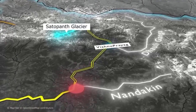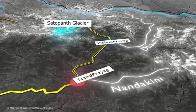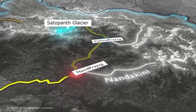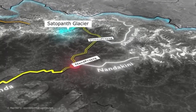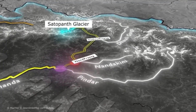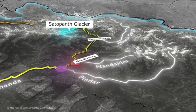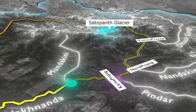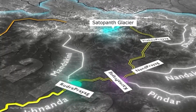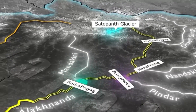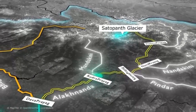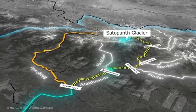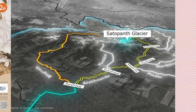Then Alaknanda river meets Nandakani river at Nandhra Prayag, which is the second Prayag. Then Alaknanda river meets Pindar river at the third confluence, that is Kandhra Prayag. And Alaknanda meets Mandakani river at Rudra Prayag. These are the four confluences. Finally, Alaknanda meets Bhaagirati river at Dev Prayag, after which it is called Ganga.